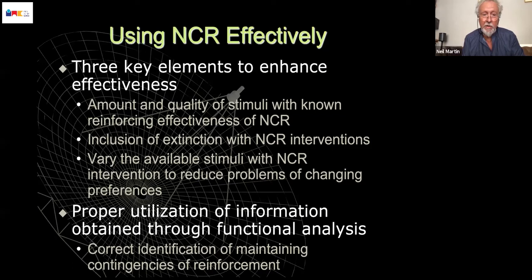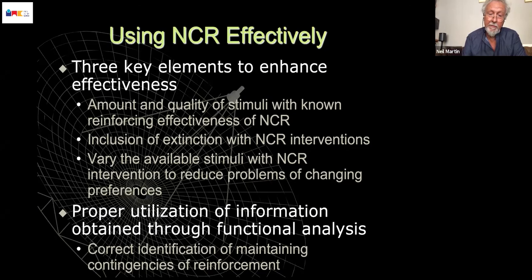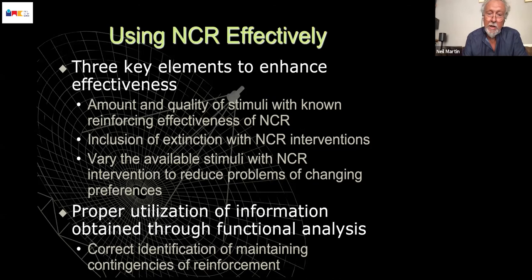It's important that you have a range of available stimuli that have been shown to have the same reinforcing effectiveness. But in order to identify that, you need to have got that information through the use of a functional analysis. So when you're looking at a problem behaviour, the functional analysis tells you what the function is, therefore what the maintaining reinforcer is, and therefore what potential stimuli you can use to get access to the same type of stimulation. Functional analysis is really mandated for using non-contingent reinforcement effectively.